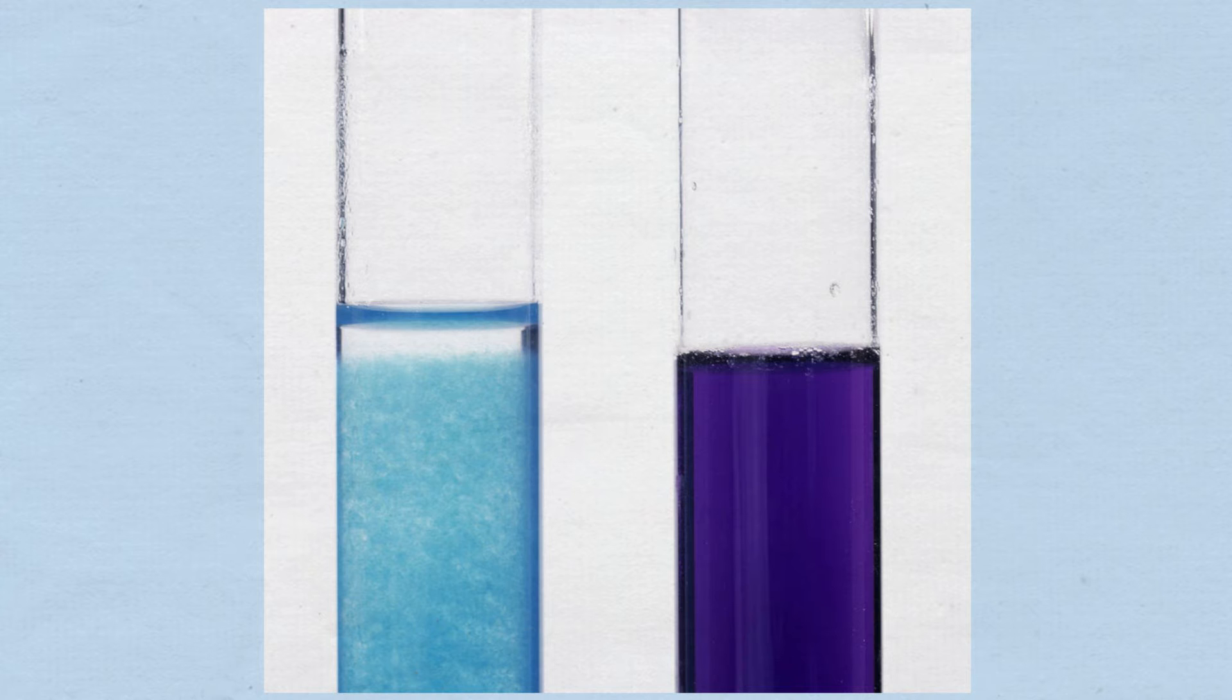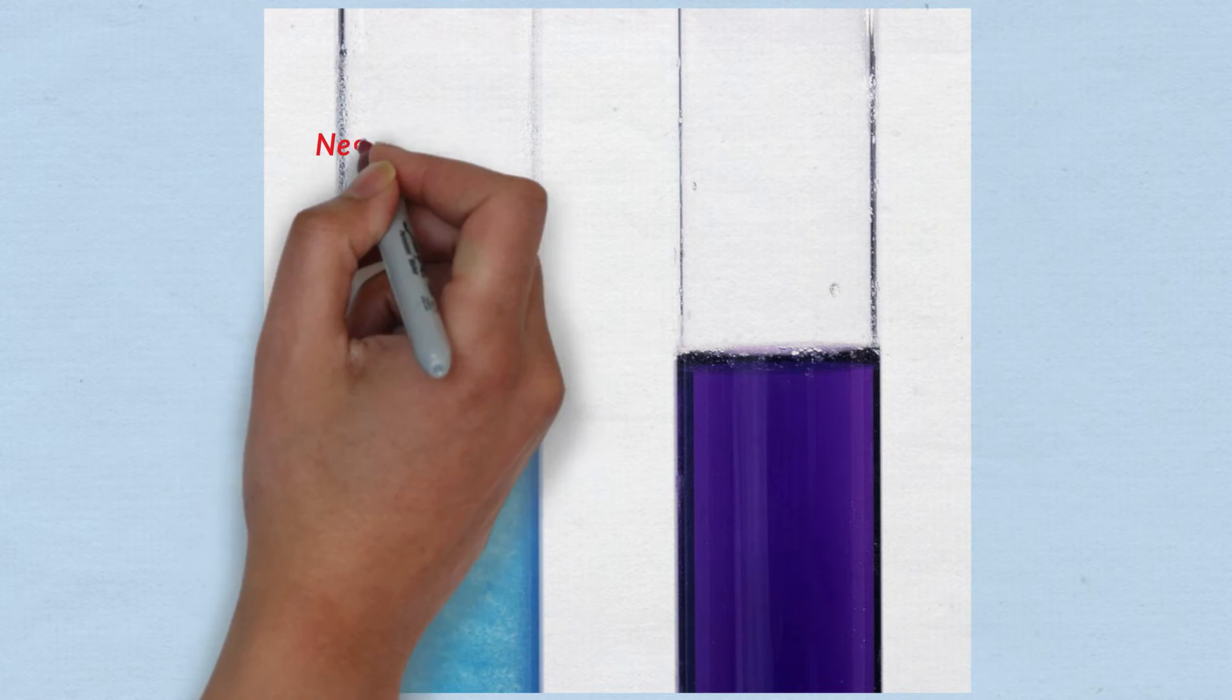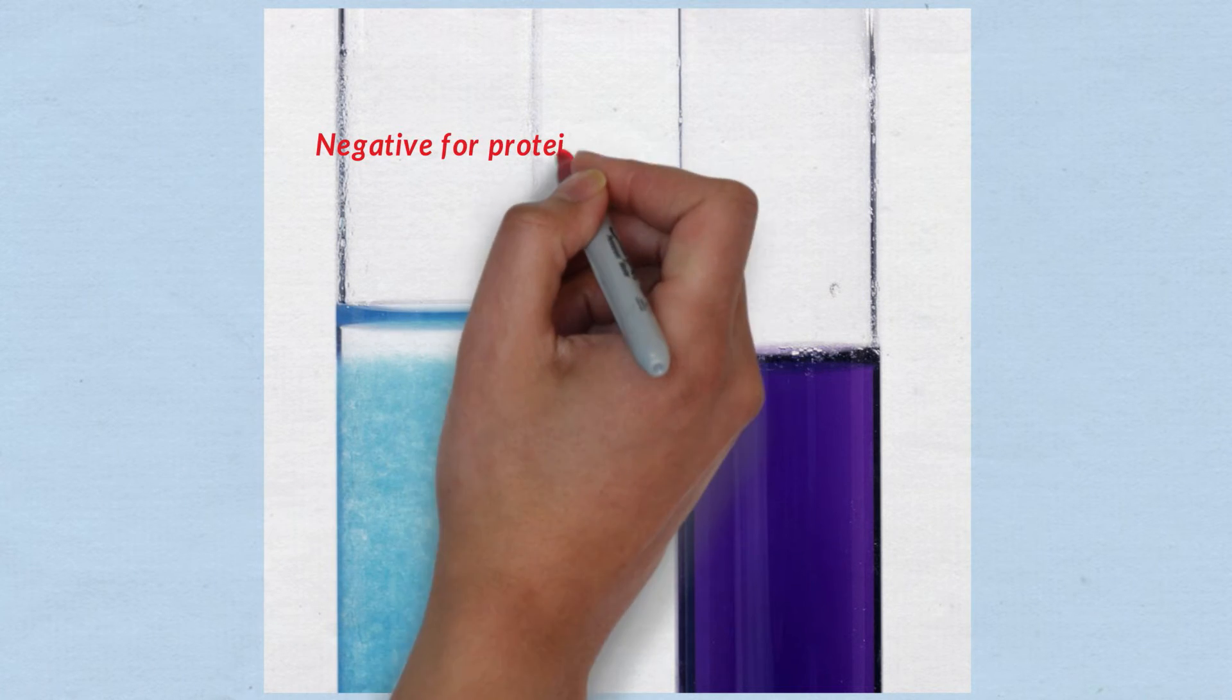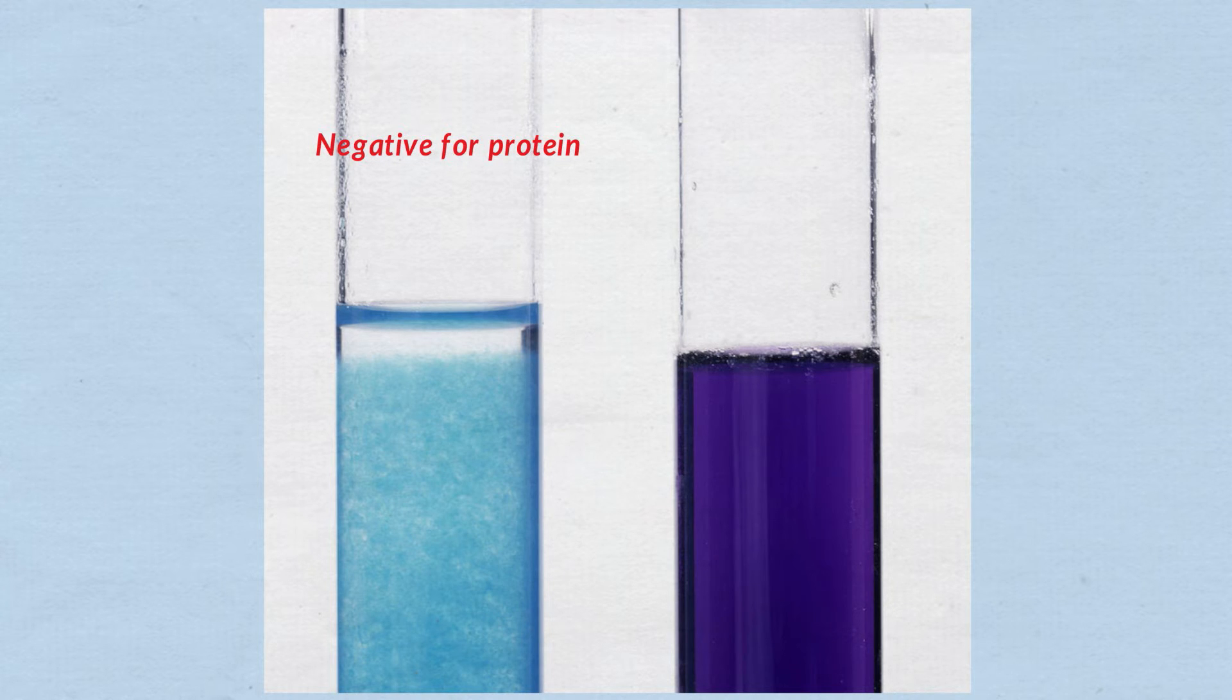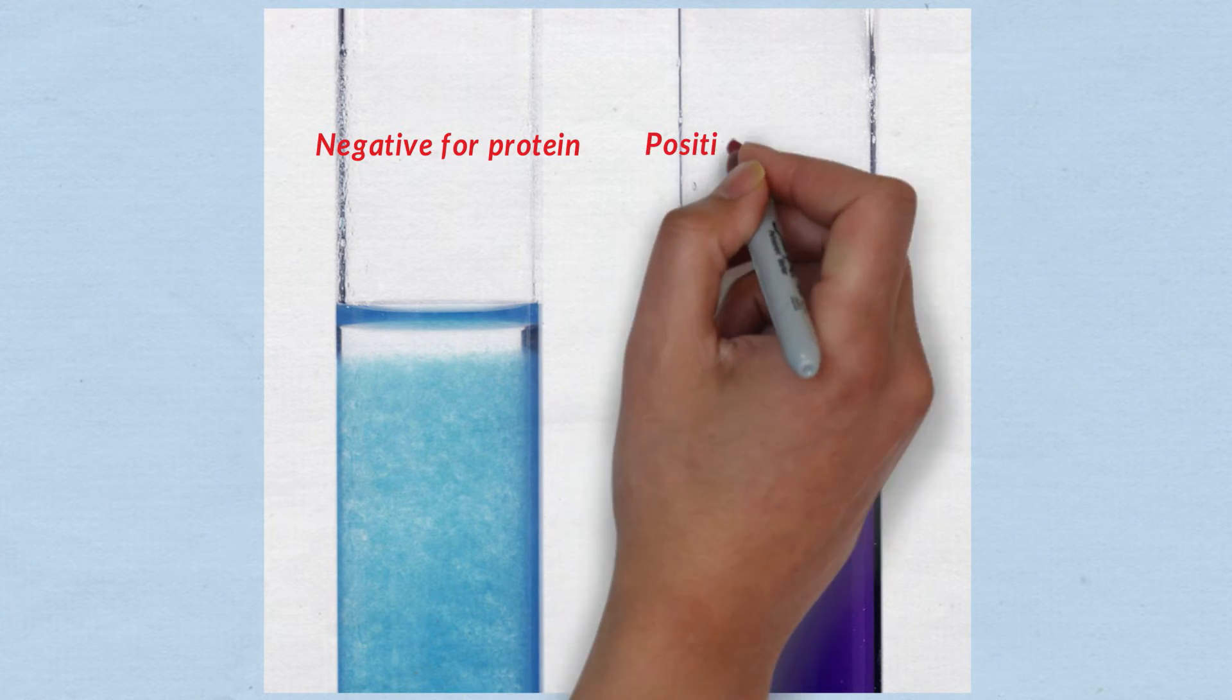If the solution is blue, this would indicate that no protein is present. If the solution turns purple, this would indicate that a protein is present.